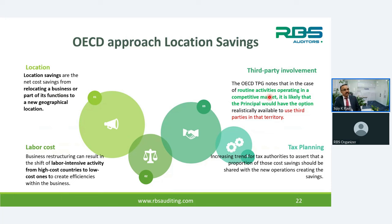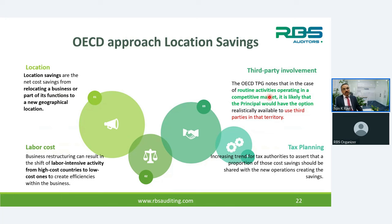OECD approaches for location savings include: cost savings from relocating to a different geographical location; labor cost savings from moving high-cost labor activities to low-cost countries; comparison with third-party involvement — what benefit would be derived if the group dealt with an independent third party instead of a related party; and tax planning benefits. All these factors feed into the analysis of location savings in business restructuring.